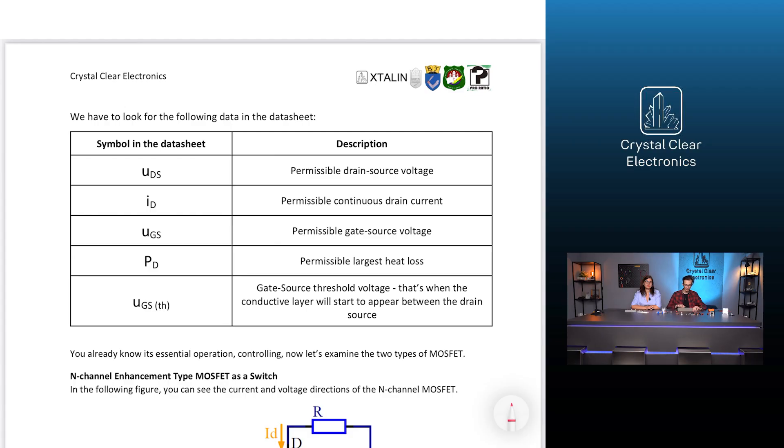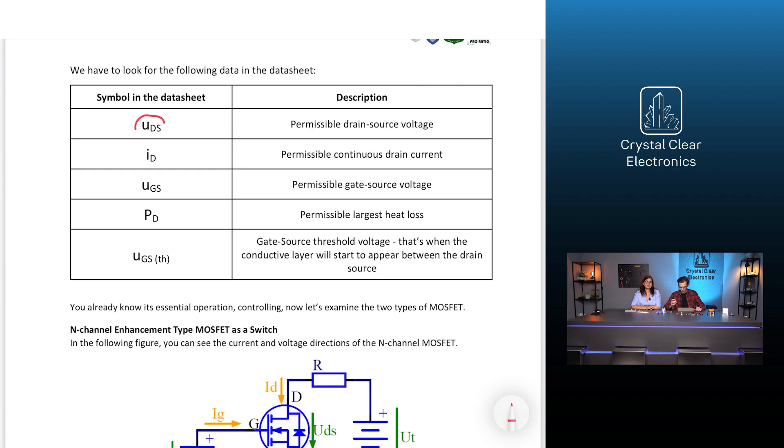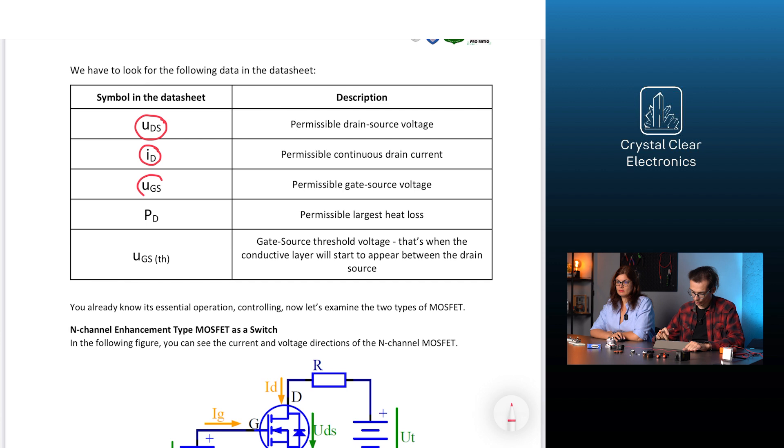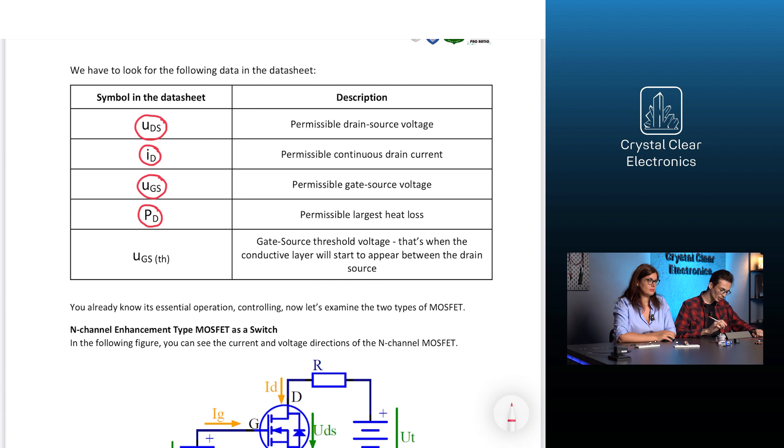We have to also look for the following data in the datasheet. The UDS indicates the permissible drain source voltage and the ID the permissible continuous drain current. UGS is the permissible gate source voltage and PD is the permissible largest heat loss. UGS TH denotes the gate source threshold voltage. That's when the conductive layer will start to appear between the drain and the source.